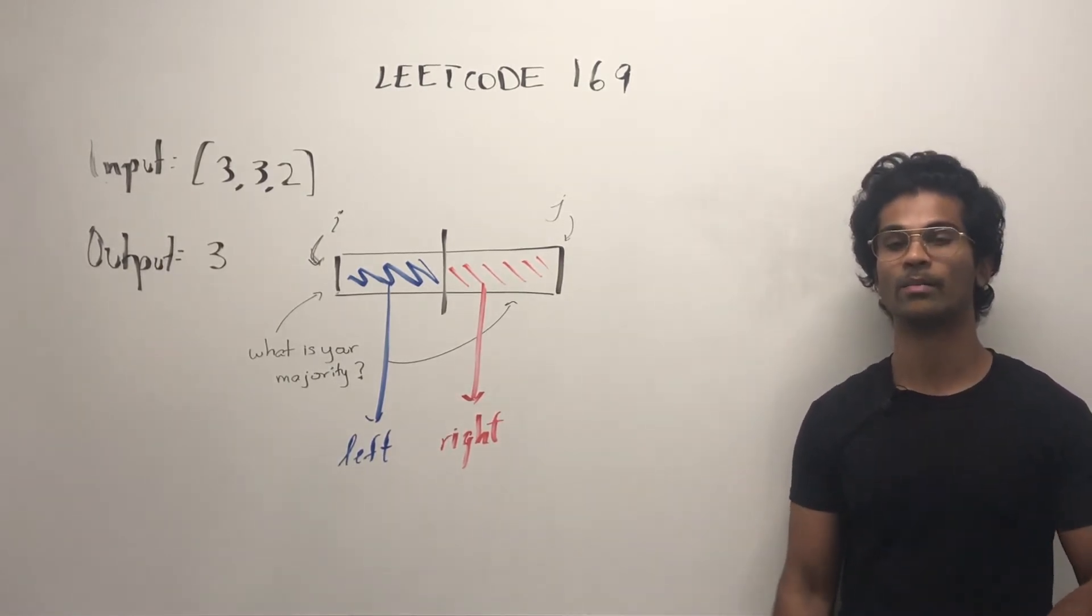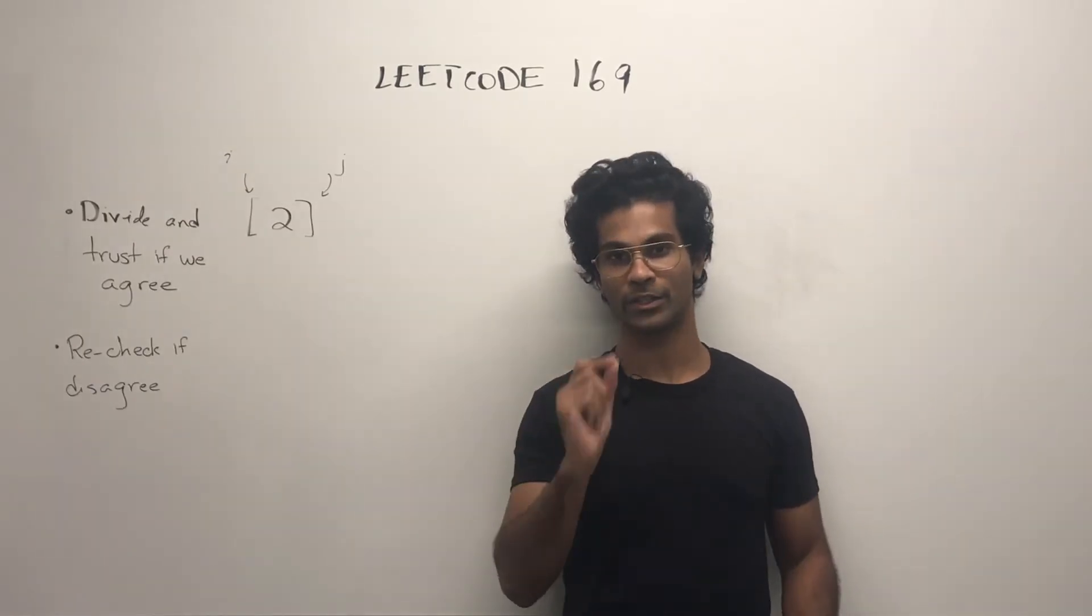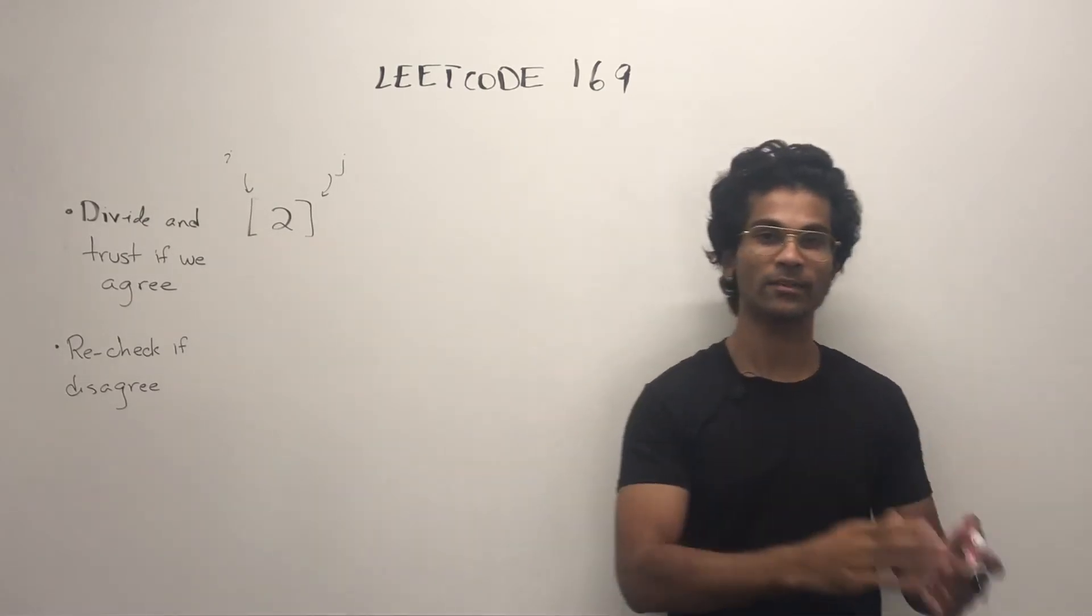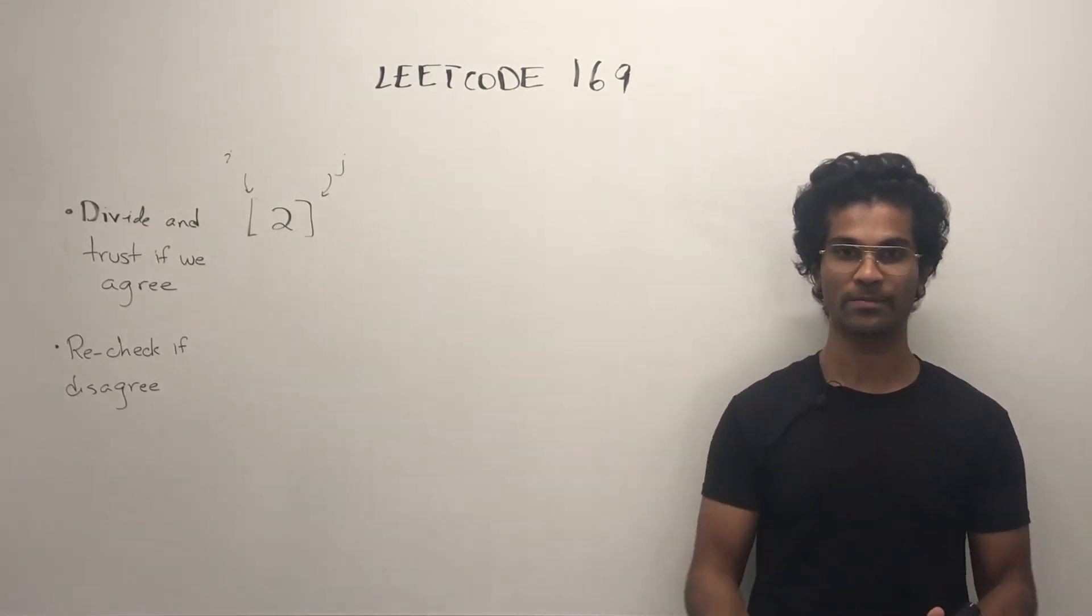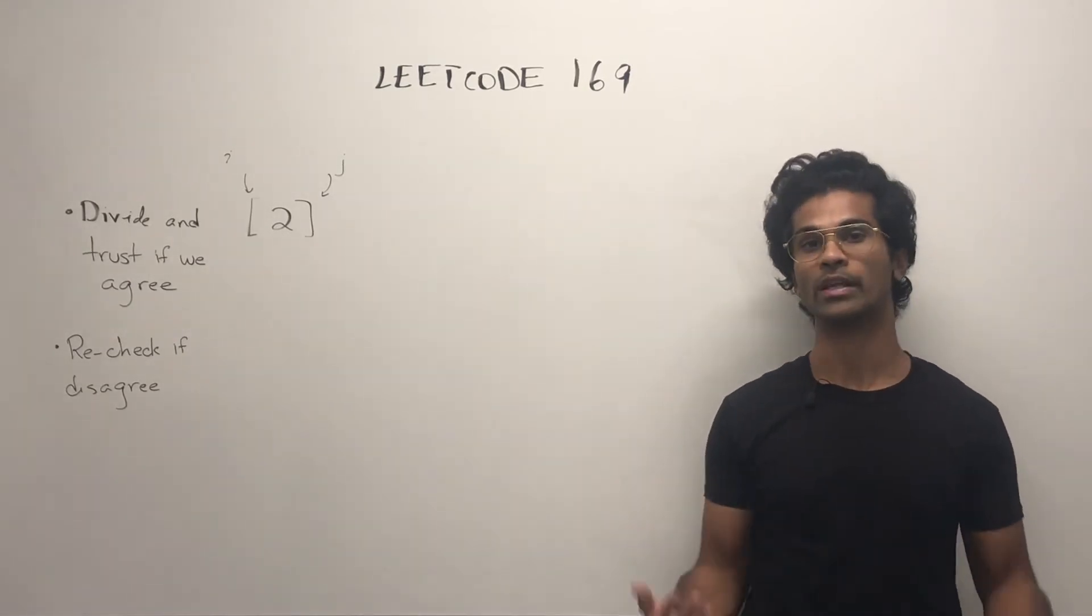Now, let's look at a more concrete example. Let's say our input was one integer array. So let's just use two, then the left and right pointers are going to be at the same point, so we just return whatever number it is, and that's our majority element.